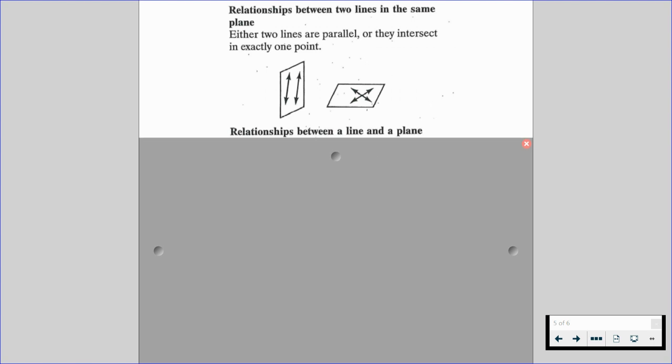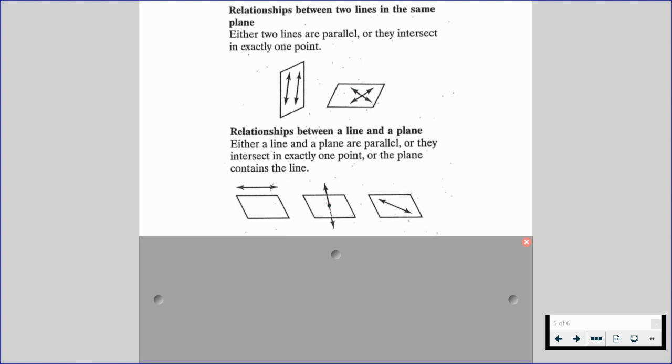We have some relationships between a line and a plane. Either a line and a plane are parallel or they intersect in exactly one point or the plane contains the line.